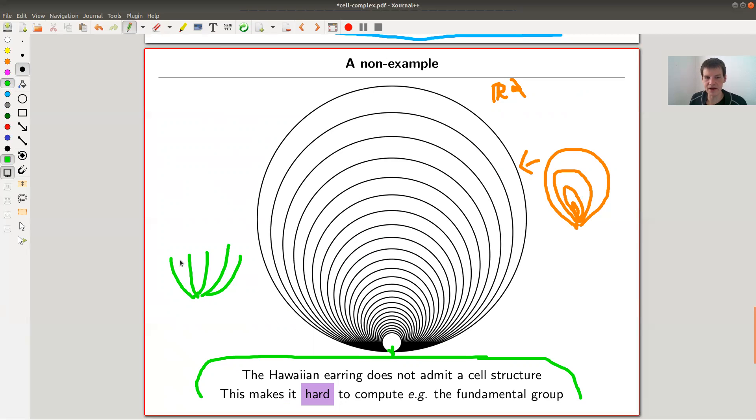Every neighborhood of that point has finitely many open arcs corresponding to the circles you cut out, but it still has infinitely many circles. So you only cut out a finite piece. Any neighborhood, no matter how small you make it, will always have an infinite piece left. That makes it very ill behaved.